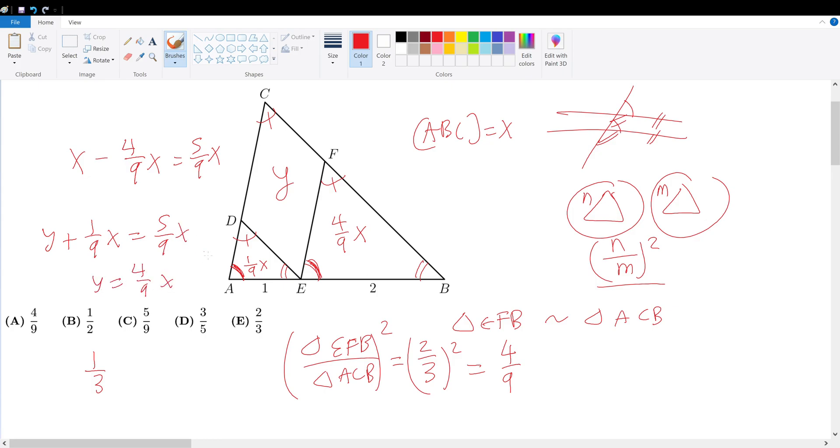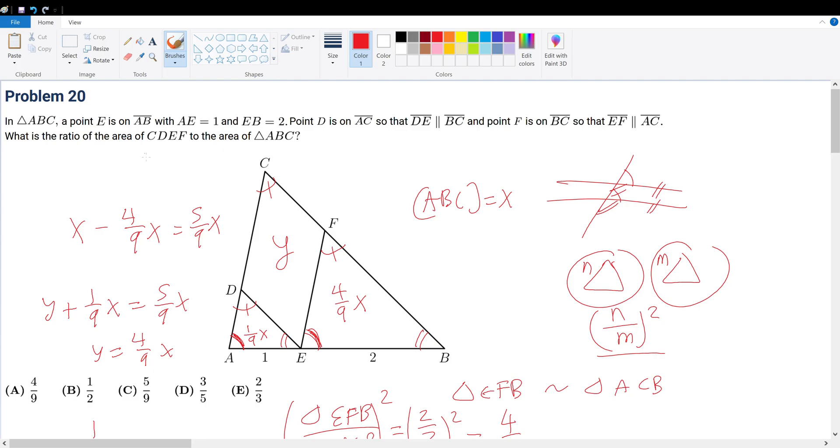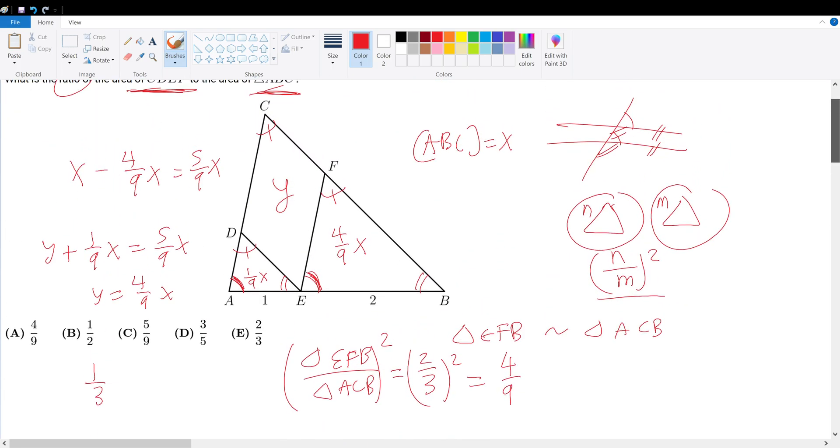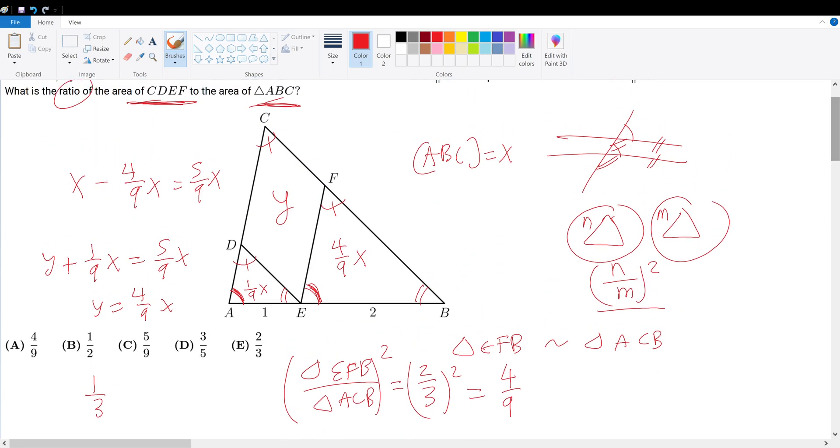Now we are trying to find the ratio of the area of CDEF with ABC. The area of CDEF, I assume that to be Y. So what is Y compared to X? Well, Y compared to X, I divide X on both sides from here to get 4 over 9. So our answer must be 4 over 9. Therefore, your answer must be answer choice A.